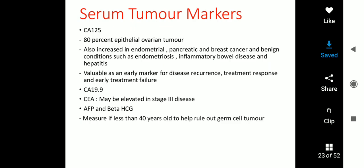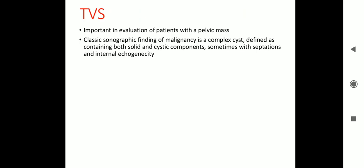AFP and beta-HCG should be measured if the patient is less than 40 years old, to help rule out germ cell tumor. Transvaginal ultrasound (TVS) is important in evaluation of patients with a pelvic mass. The classic sonographic finding of malignancy is a complex cyst defined as containing both solid and cystic components, sometimes with septations and internal echogenicity.